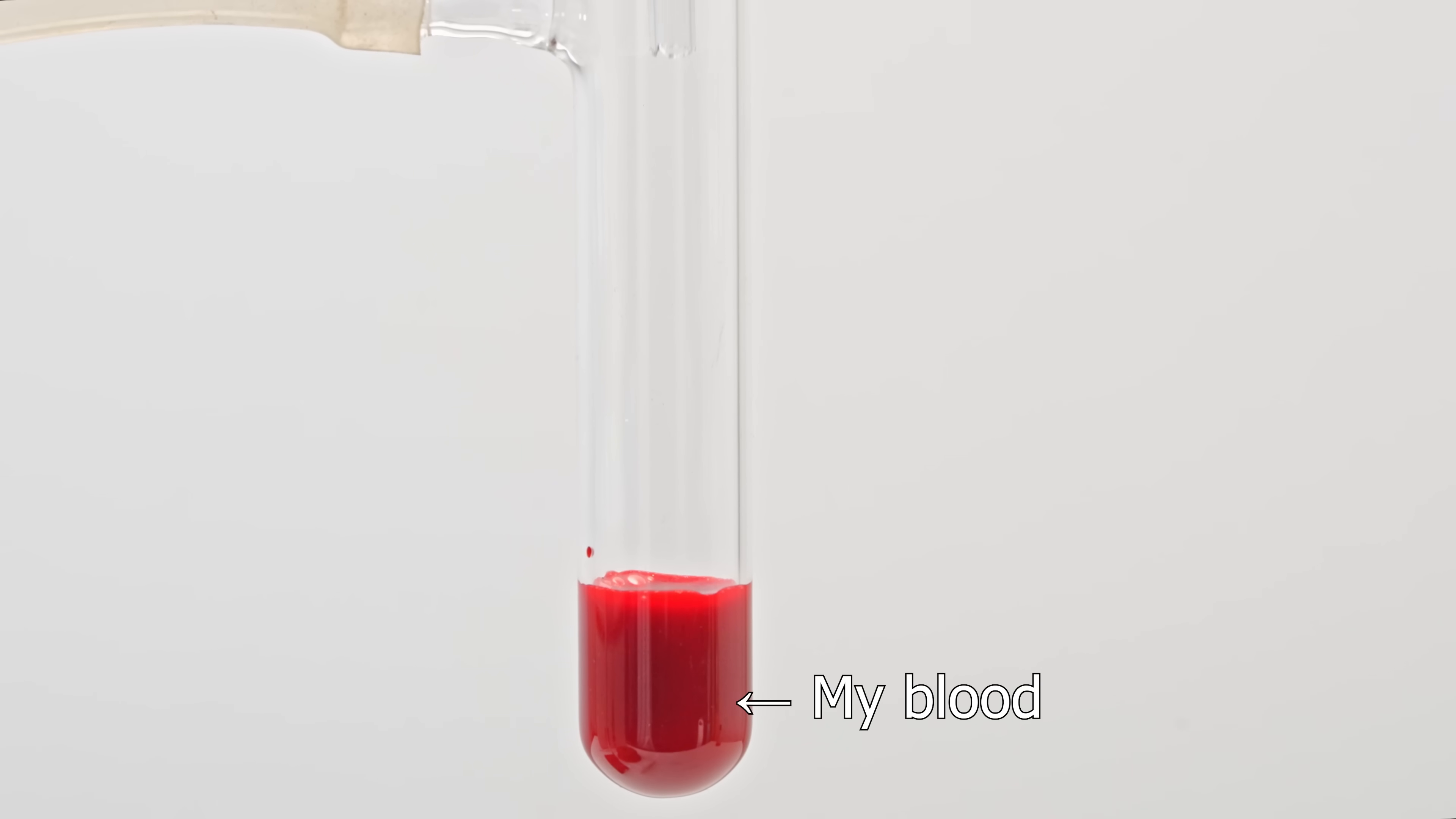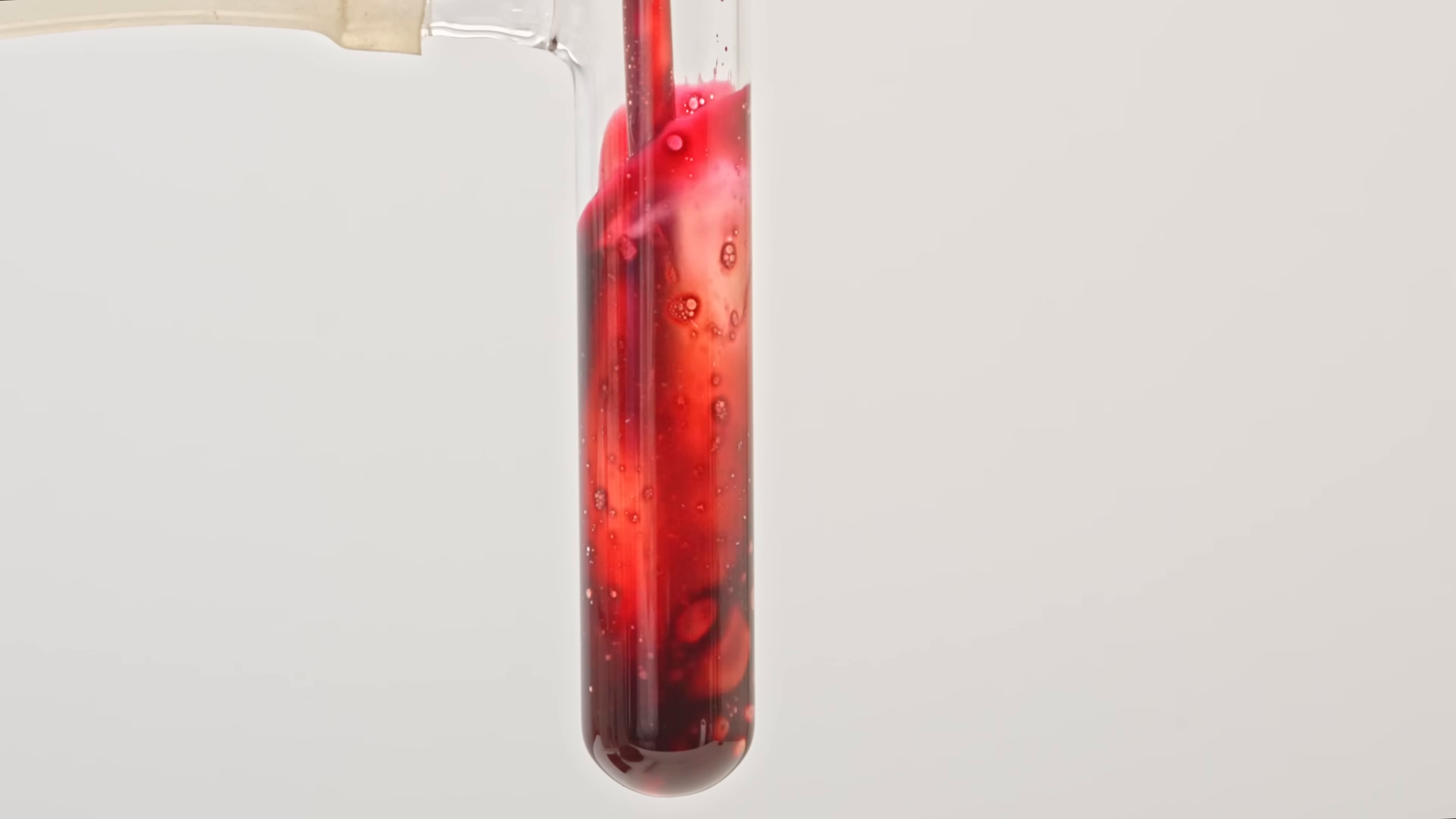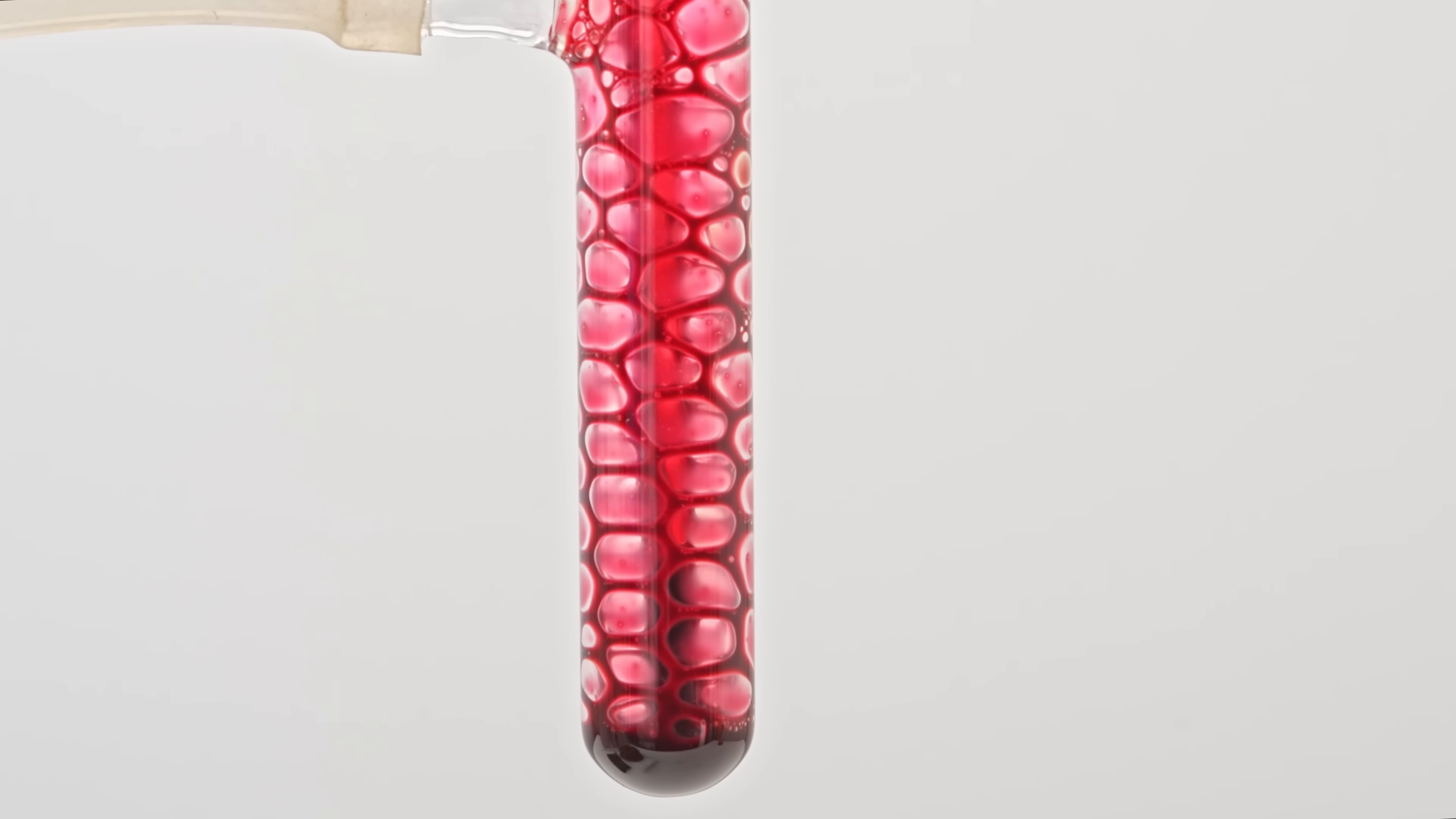When inhaled, nitrogen monoxide can bind to hemoglobin like carbon monoxide, converting it into a form that is incapable of carrying oxygen. Passing this gas through blood results in a dark crimson color, similar to the effect of carbon monoxide. Check out my video about reactions with blood.